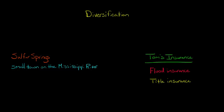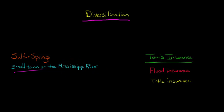In this video, we're going to talk about diversification and how it relates to common and independent risks. Let's say that you move to a small town on the Mississippi River, right up against the river, with a nice little home in the town of Sulphur Springs. In Sulphur Springs there are a total of 100 homes altogether.